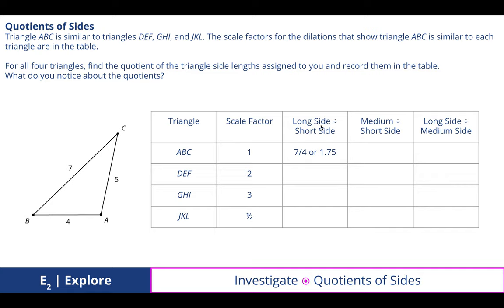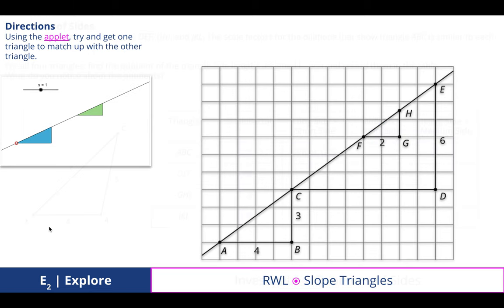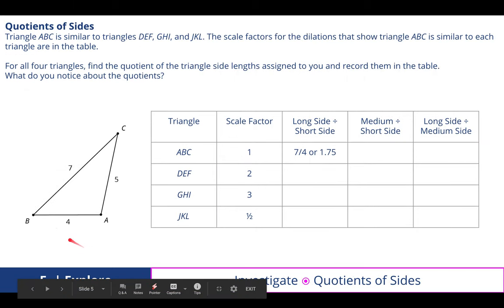Remember, the long side, which is 7, to the short side - notice we have three different combinations here: long to short, medium to short, and long to medium. If I take 7 to 4, I get 1.75, because 7 divided by 4, I can put 4 into 7 once, and I get 3 left over, over the denominator of 4, which is 1.75. The medium to short side is really just a ratio of 5 to 4, which we discovered was 1.25.